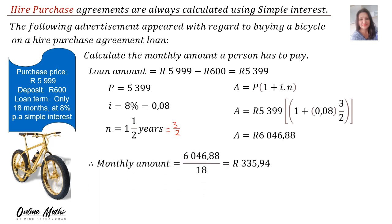Remember, the question asked to calculate the monthly amount the person has to pay. Therefore the monthly amount is R6,046.88 divided by 18. The 18 comes from 1 and a half years equalling 18 months. Therefore the monthly installment is R335.94.